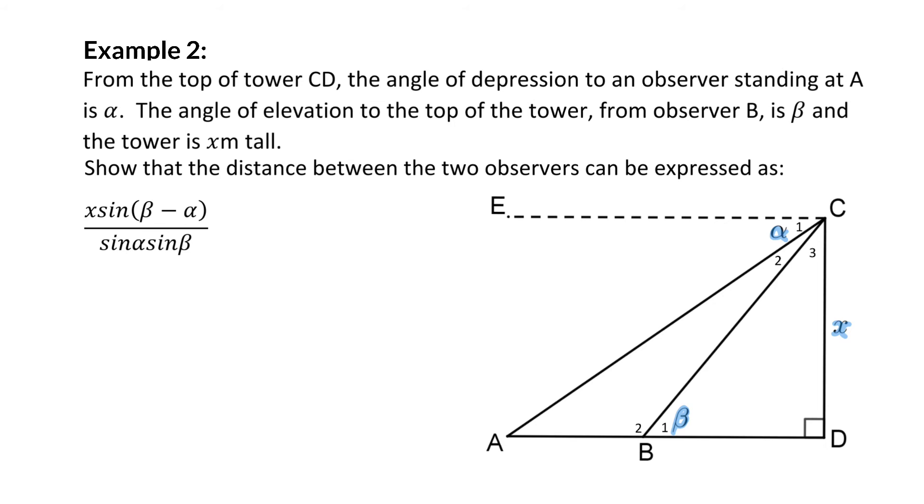So in this example, we have a tower CD and two observers, one standing at point A and one at point B. The question: show that the distance between the two observers can be expressed with the following ratio. The distance between the two observers is then side AB, which is what we need to calculate.